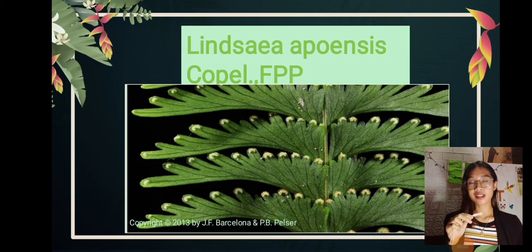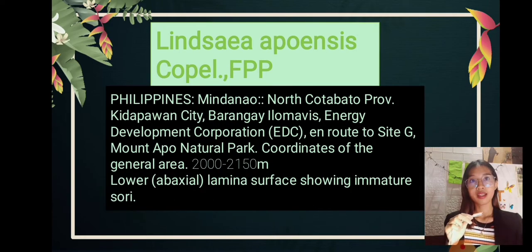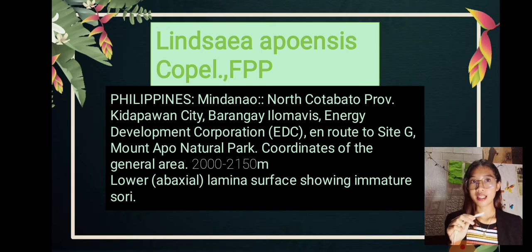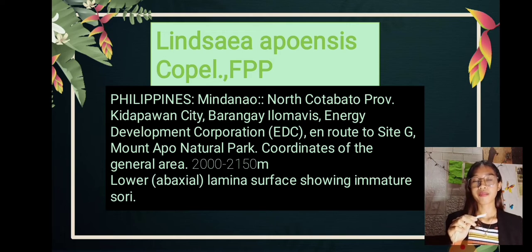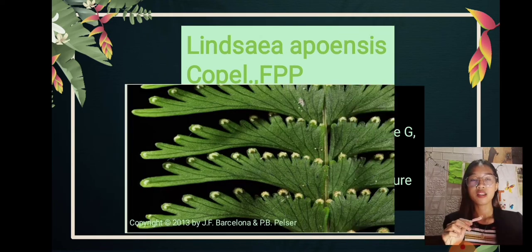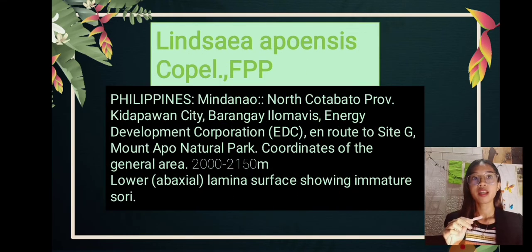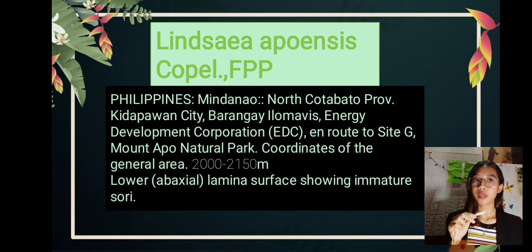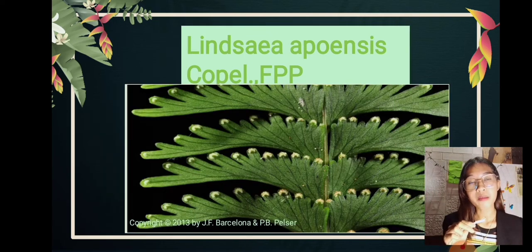The next representative species is Linsaea adiantoides, which is endemic in Mindanao, North Cotabato Province of Kidapawan City, Barangay Ilumaves, Energy Development Corporation, Mount Apo Natural Park. It has coordinates in the general area of 2,000 to 2,150 meters. This species is lower abaxial, and the lamina surface is showing immature sori.